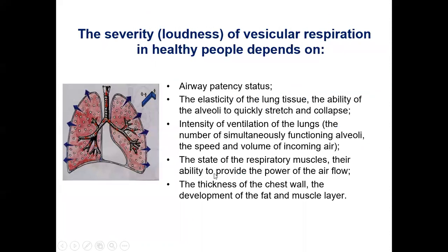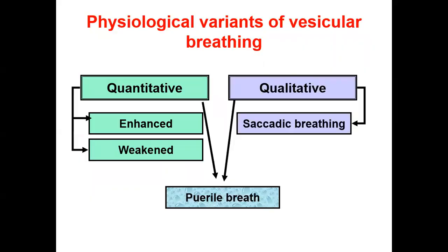The severity and loudness of vesicular breathing depends on airway patency, elasticity of lung tissue, ability of alveoli to quickly stretch and collapse, intensity of ventilation, state of respiratory muscles, and also thickness of the chest wall — for example, development of fat and muscle layers. There are variants of vesicular breathing: quantitative changes such as enhancing or weakening, qualitative changes such as saccadic breathing, and also combined changes represented by puerile breathing.